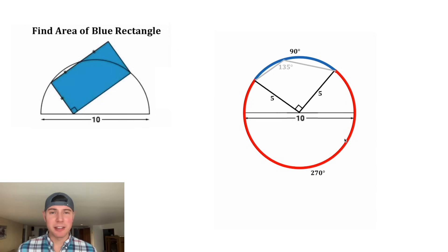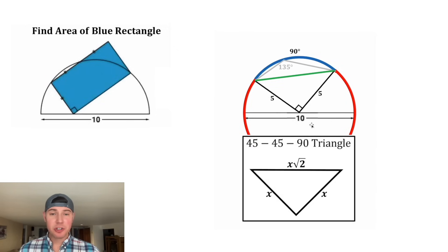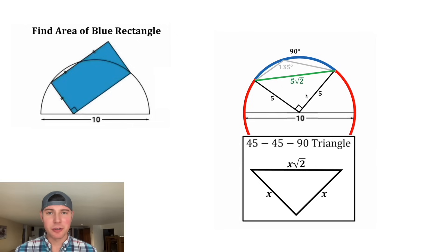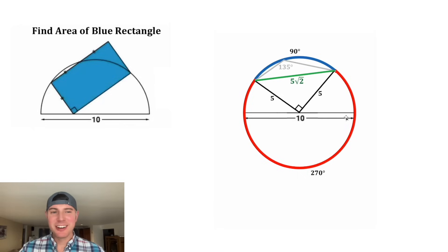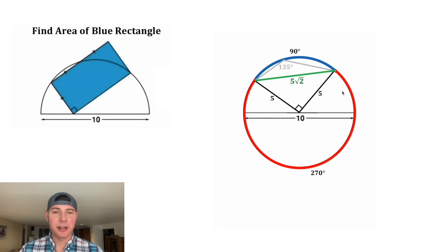Since both of these are radii, they both have a length of five. So if we connect this here, we have another isosceles right triangle. If we use the shortcut for 45-45-90 triangles, we can see this green side is equal to 5√2. Here are the steps of the Pythagorean theorem to verify it, and we did all of this work just to get this green length.